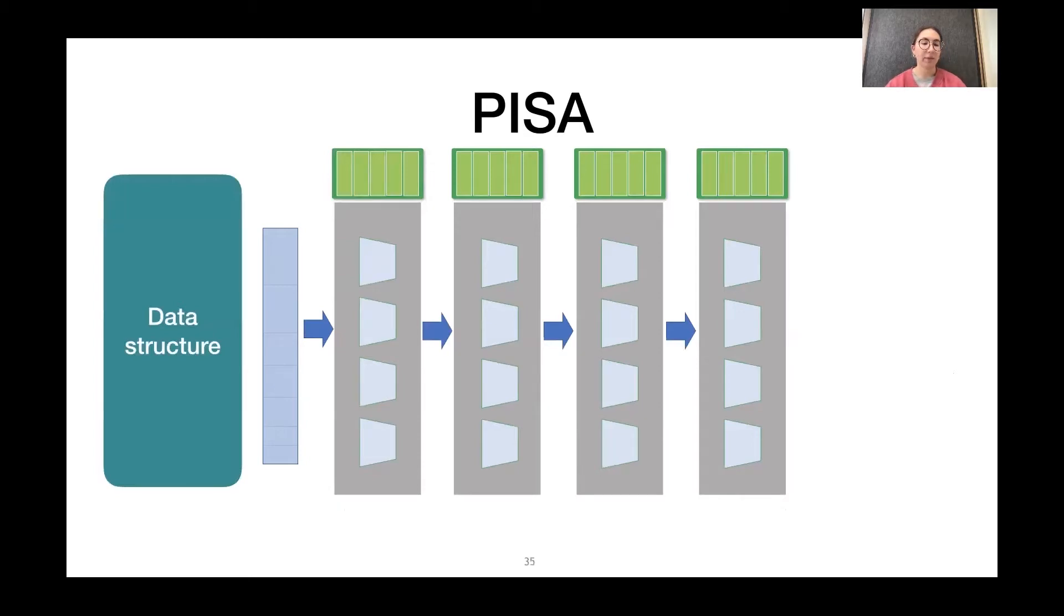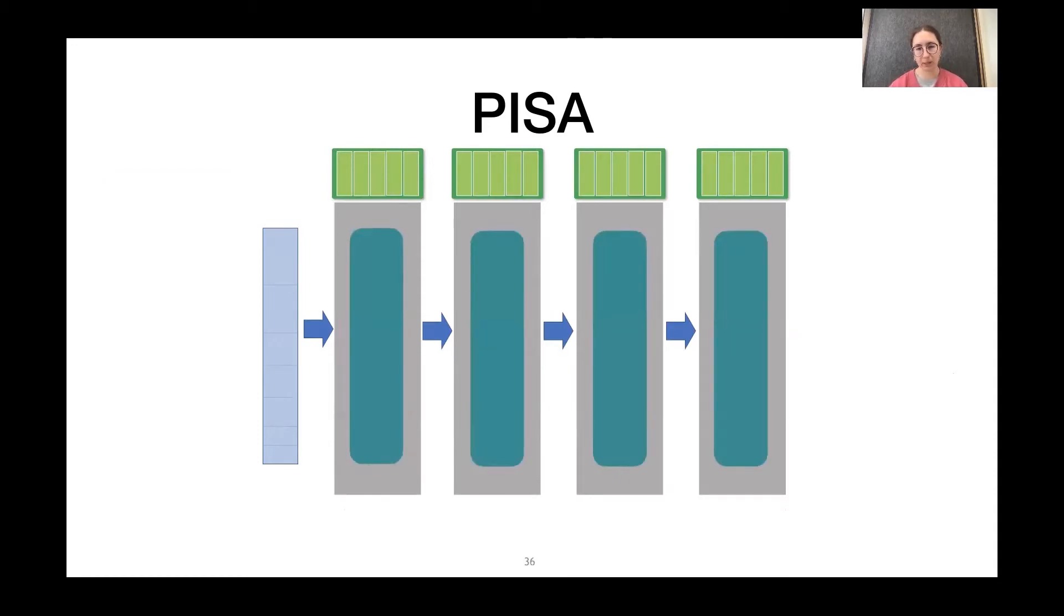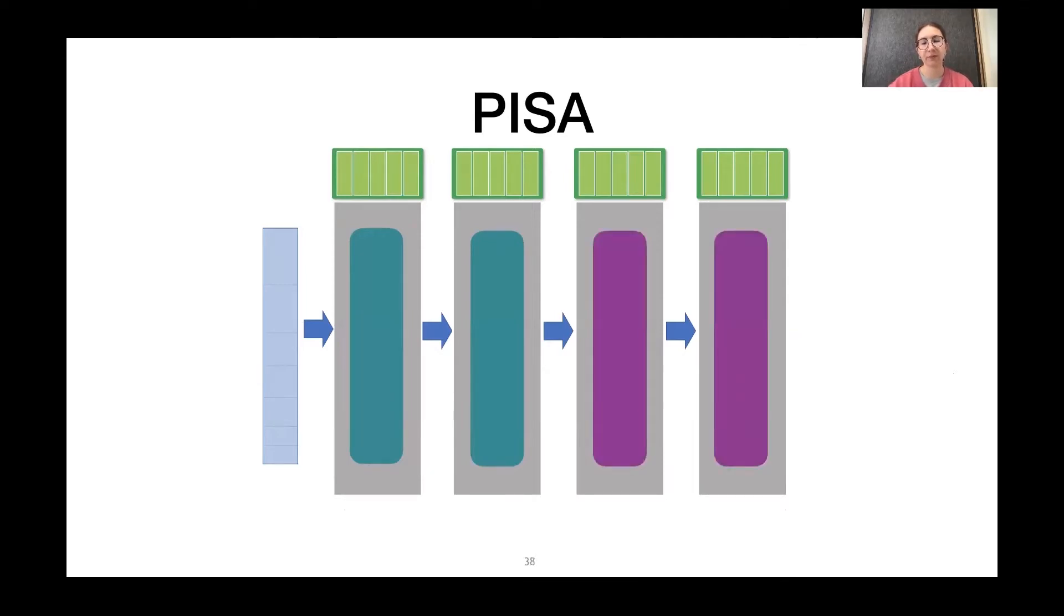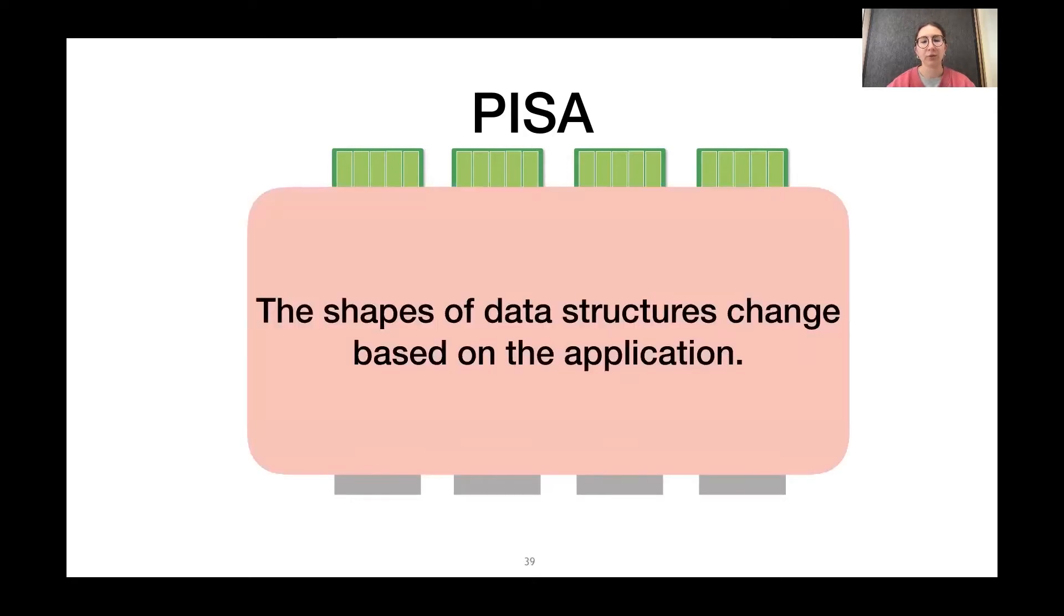So, let's say we have a data structure we want to fit onto our switch. Now, one thing we can do is just make the data structure as big as possible, use all the resources. Now, this would be fine unless we have another data structure that we need to fit onto the switch. So, because we can't just add more resources, we have to free them up by shrinking data structure one to fit data structure two onto the switch. So, the shapes and sizes of these structures might change based on our application.